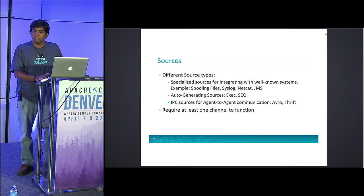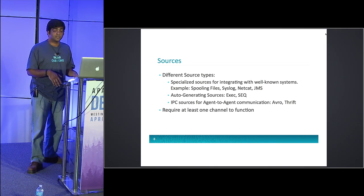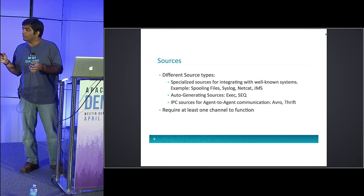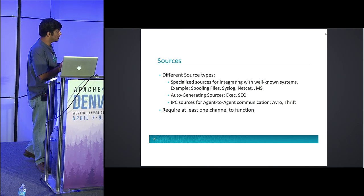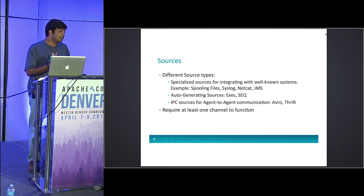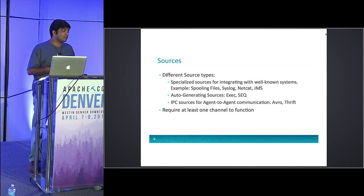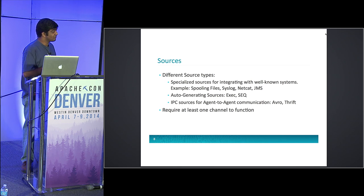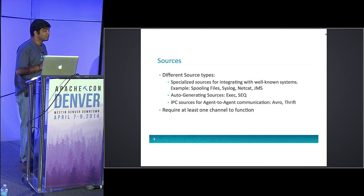JMS source actually pulls data from anything that supports a JMS format. We have extensively tested this with ActiveMQ, and it works pretty well. With some tweaking it also works with RabbitMQ. JMS source is quite important if you have legacy systems which use JMS to push data — you don't want to take your legacy system and change it. You can use the JMS source to receive data from the JMS broker and it'll push the data into Flume.